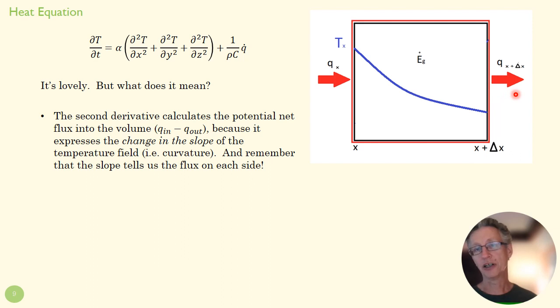So I've got a lot of flux coming in here, not much coming out there. My curvature is positive, so this would be a positive term, and that would tend to make my temperature go up if all of my other terms are equal. So that second derivative tells us the curvature of the temperature field, but more importantly, it tells us the change in slope—the change in flux from one side of the field or of the volume to another.